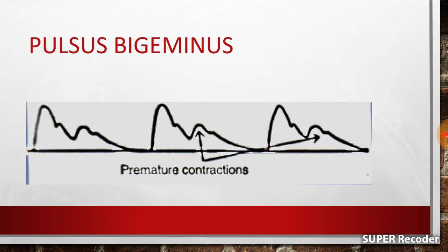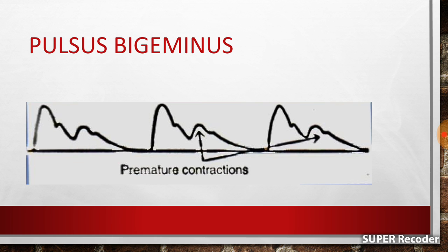A similar pulse wave to pulsus bisferens is pulsus bigeminus. Here also you will see two upstrokes. But in this case, after the dicrotic notch — that is, during diastole — there is a premature ventricular contraction, giving rise to another upstroke and another pulse wave. The key difference between pulsus bisferens and pulsus bigeminus is that in pulsus bigeminus there is no compensatory pause between the two waves, whereas in pulsus bisferens there is a compensatory pause.